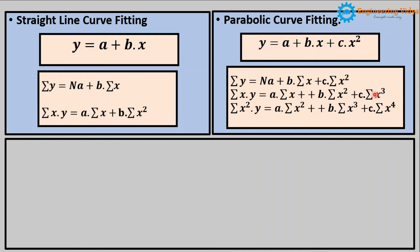In the second equation, again if we multiply x on both sides we get the third equation. After multiplying x on the left hand side, x becomes x square. Again where x was multiplied by x we get x square, x square multiplied by x gives x cube, and x cube multiplied by x gives x raised to 4. So here we have covered the mathematical expression for straight line curve fitting as well as parabolic curve fitting.